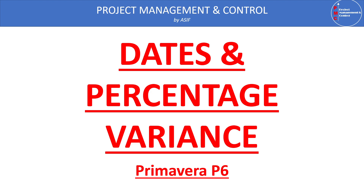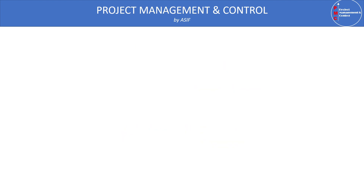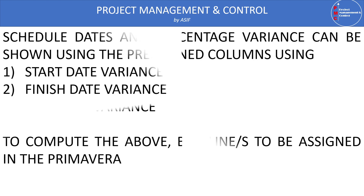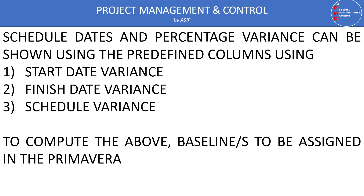Similarly, to assess project health and understand how we are progressing, the overall percentage plays a major role. We can compute the variance between planned and actual percentage using schedule variance. In Primavera P6, dates and schedule variance can be shown using the column tracking tool, where we can display start date variance, finish date variance, or schedule variance. Schedule variance is used to compute planned versus actual performance and percentage in the program.